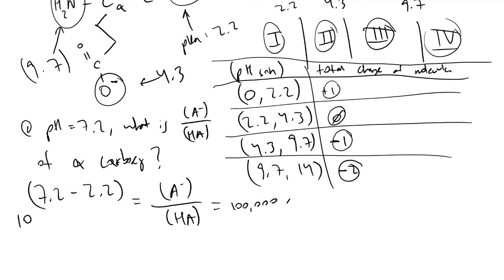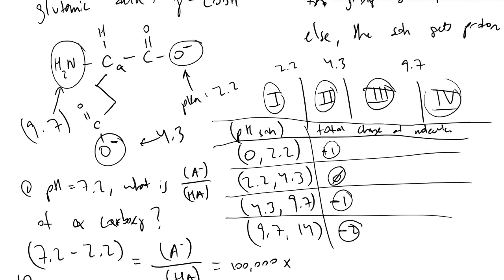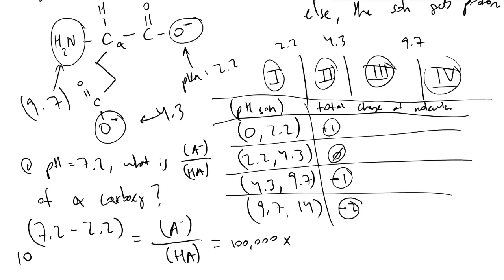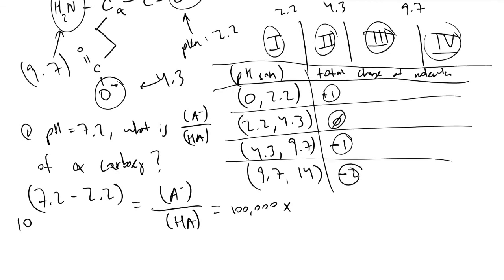This is equal to 100,000. So there are 100,000 times more unprotonated carboxylic acids present, referred to as a carboxylate, for this particular part of the molecule at a pH of 7.2.